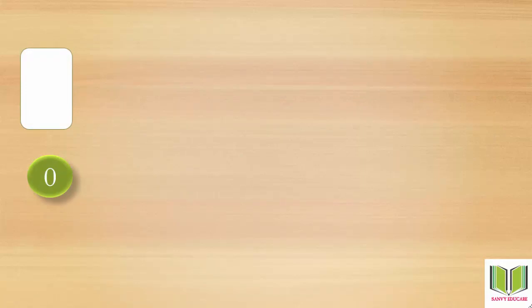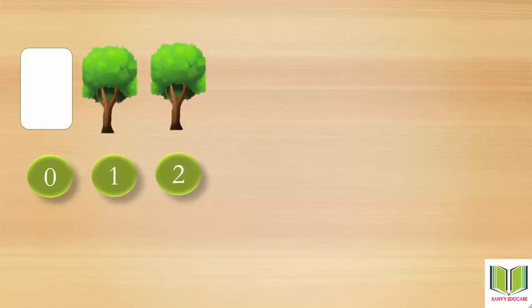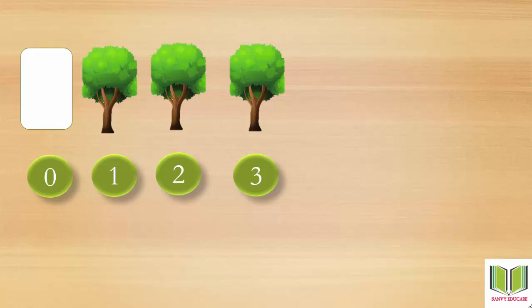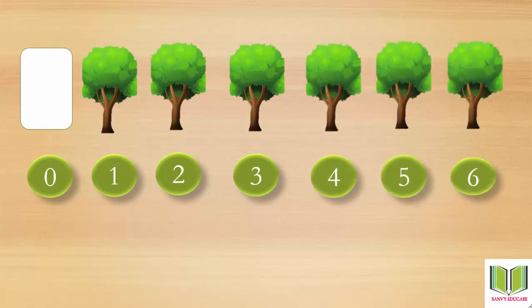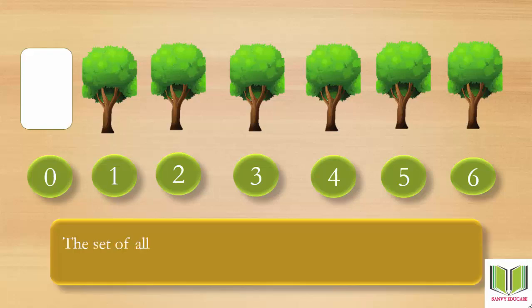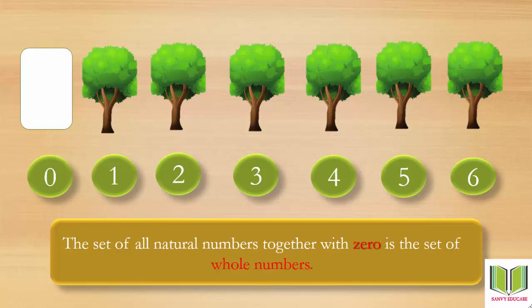Here we can see a blank box where the number is denoted as zero, as there is no tree. The trees are numbered one, two, three, four, five, and six. The set of all natural numbers together with zero is called the set of whole numbers. So here, zero is added to the natural numbers and we get a new set.